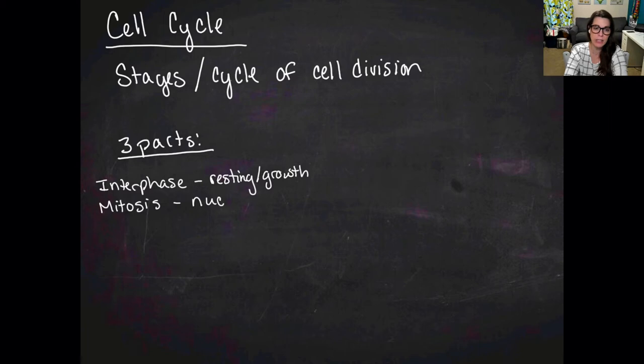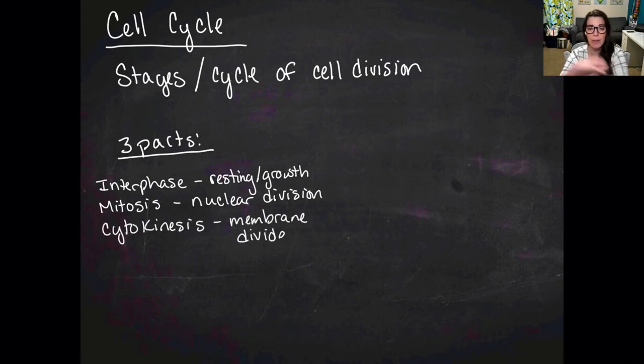And then you have mitosis, which is nuclear division, which is why this can only happen in eukaryotes because prokaryotes don't have a nucleus. And then you have cytokinesis, which is actually when the membranes divide. It's technically division of the cytoplasm, and it's what forms two separate cells.